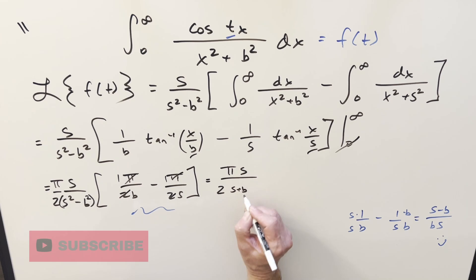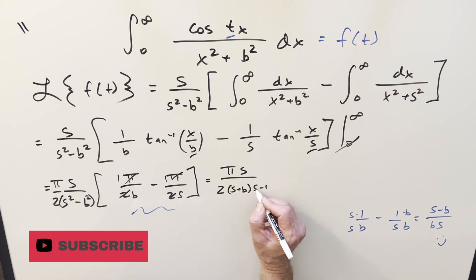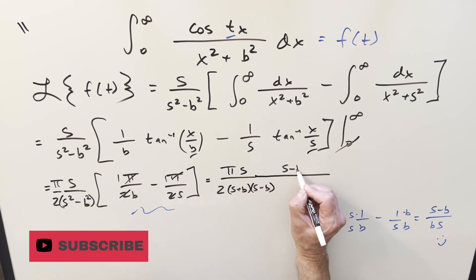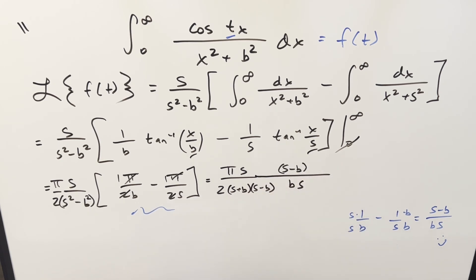Let's factor that out, difference of two squares. I can write it as s plus b, s minus b. And then here on this stuff, let's get it all in one fraction. So here we'll have s minus b, and then we'll have this bs. I can cancel this one with this one. Cancel here and here. So what we're left with, let me just reorder it a little bit. We're going to have pi over 2b times s plus b. And this is going to be our value for the Laplace transform of f of t.